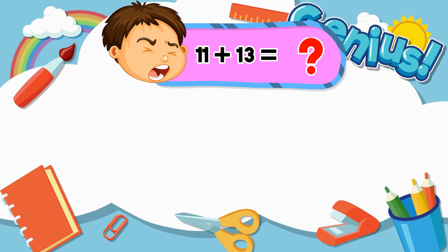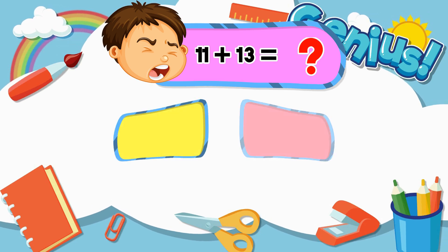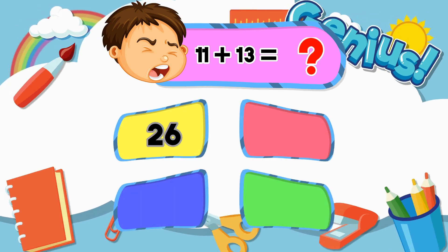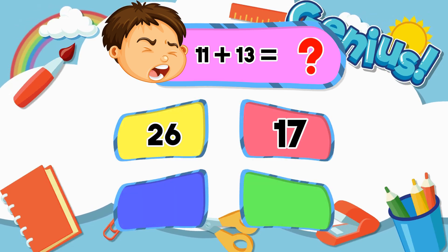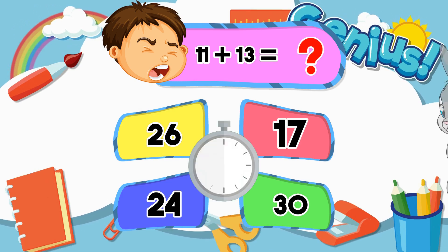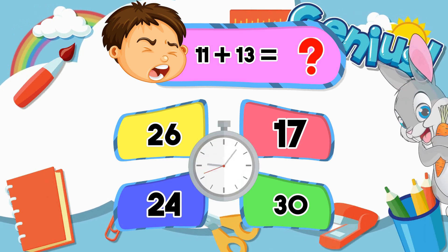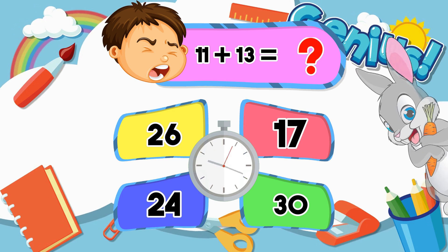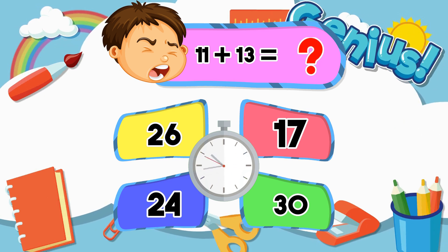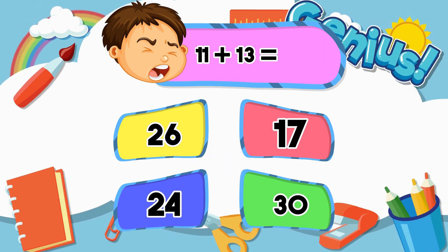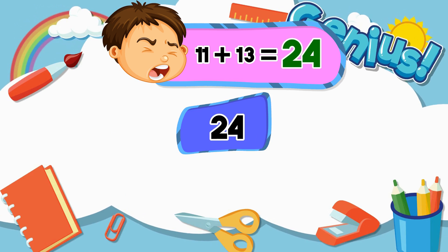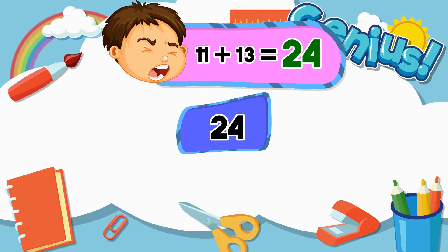What is 11 plus 13? Options: 27, 20, 17, 30. The correct answer is 24.